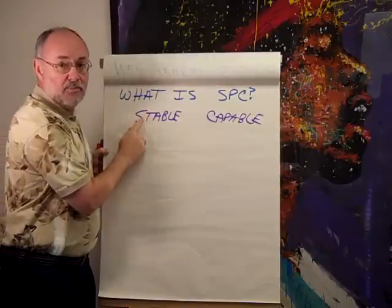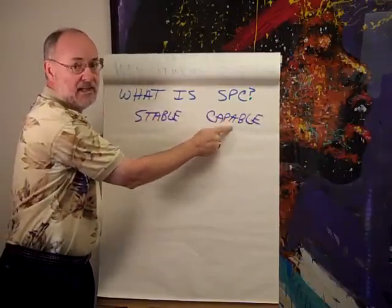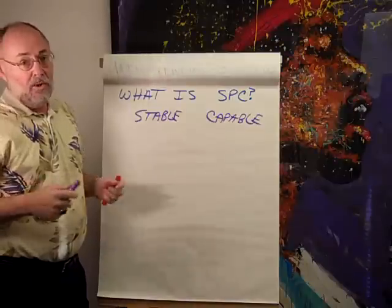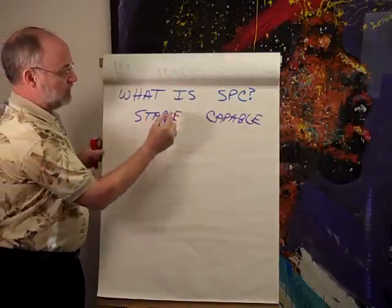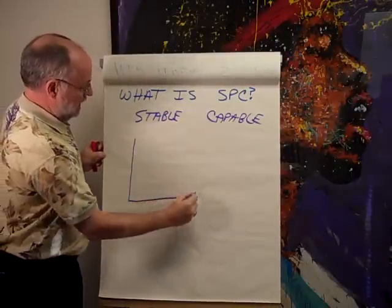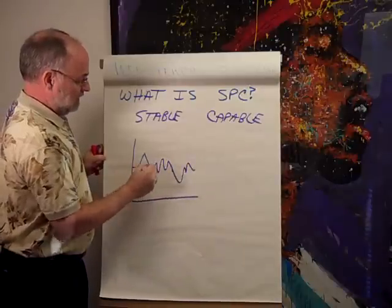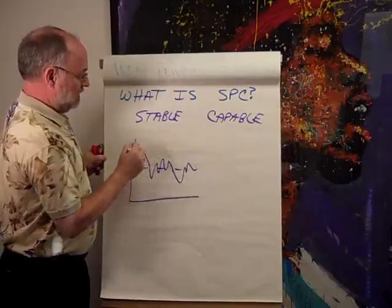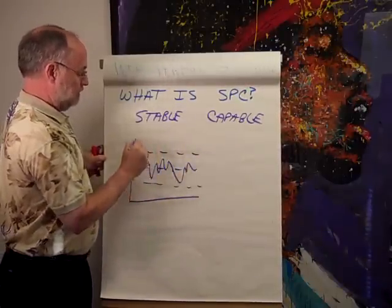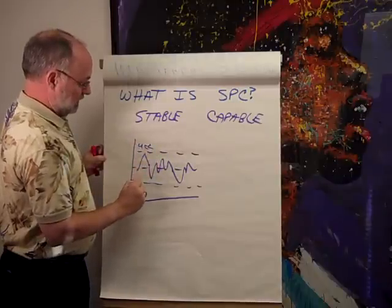So this is about: does the process perform consistently, and does it meet customer specifications? For stability, we're going to use control charts. We'll have our process plotted over time, with a center line, an upper control limit, and a lower control limit — your UCL and LCL.